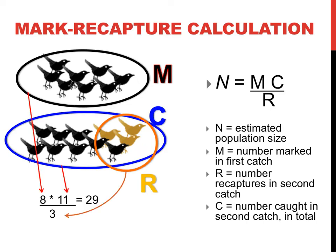If you take M, the first capture, which is 8, and multiply it by C, the number in the second sample, which is 11, and finally divide this number by 3, which is the number of recaptures, or R, you could estimate the size of this population to be around 29.